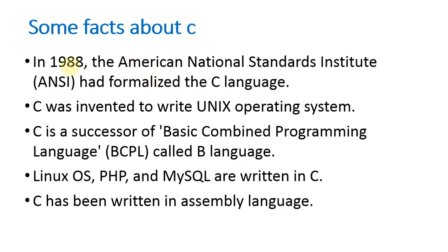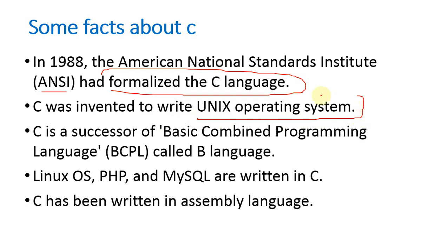There are some facts about C language. In 1988, the American National Standard Institutes — simply ANSI — formalized the C language. C was invented to write the UNIX operating system. UNIX, Linux, DOS, Windows, Mac, and Android are all different operating systems, and C was invented to write the UNIX operating system.